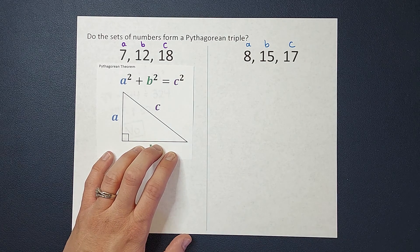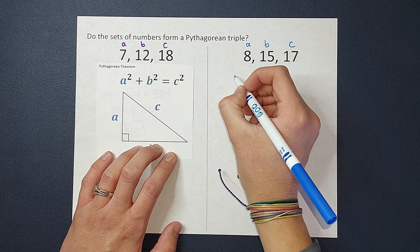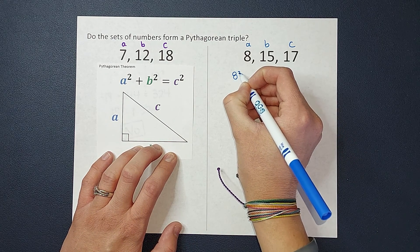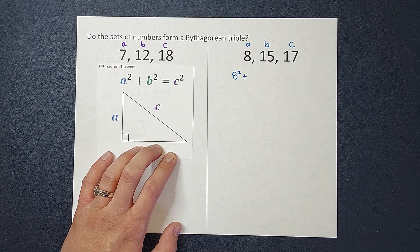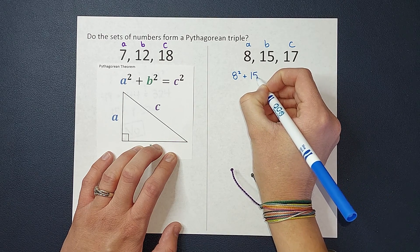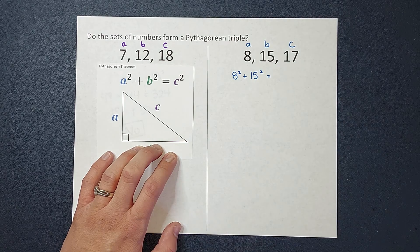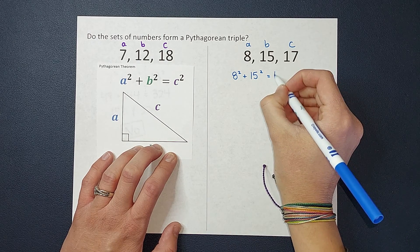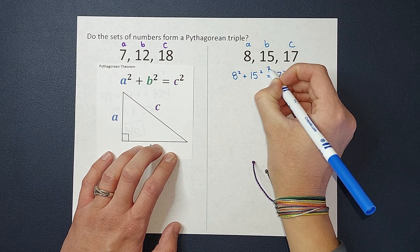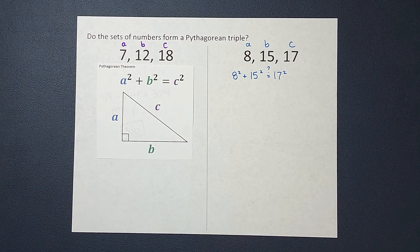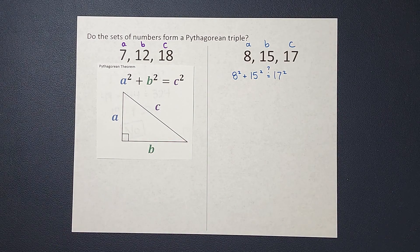Plugging it in again to my Pythagorean theorem. A squared, so 8 squared, plus B squared, so 15 squared, equals C squared, which is 17 squared. And again, we are seeing if these are equal, so I'm going to put that little question mark there to remind myself.